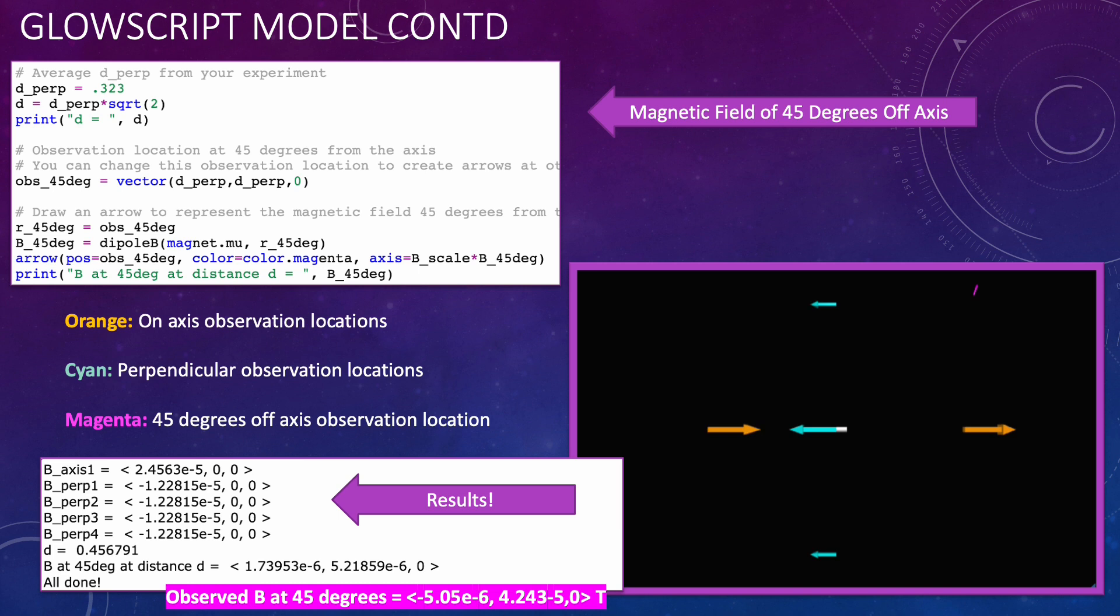We again see here that the closer to the magnet the larger the magnitude of the arrow. We also see that intuitively the arrows on axis are pointing in the direction of the dipole moment while the perpendicular arrows point in the opposite direction, very similar to what we saw with electric fields. It also appears that my theoretical magnetic field at 45 degrees off axis is quite different than my observed one.